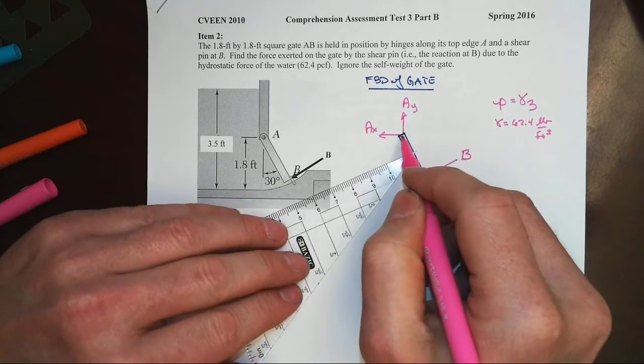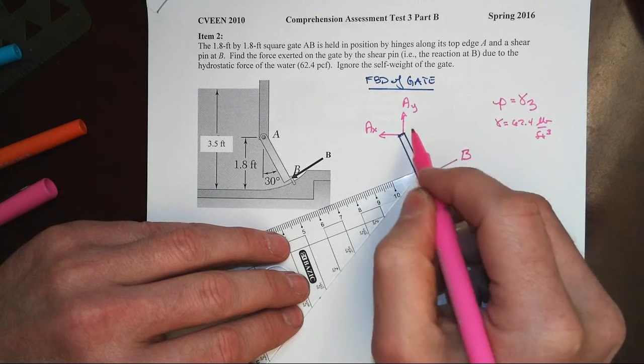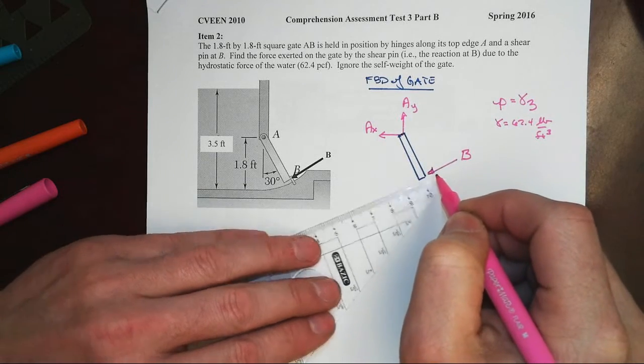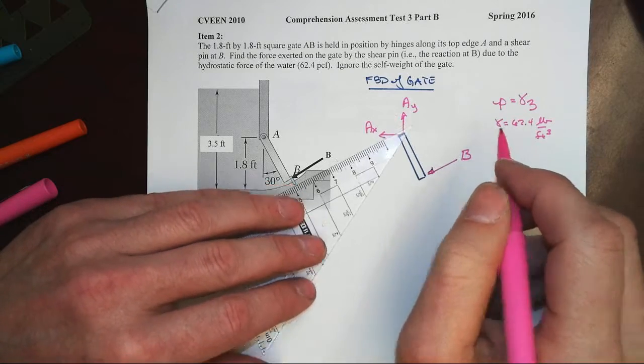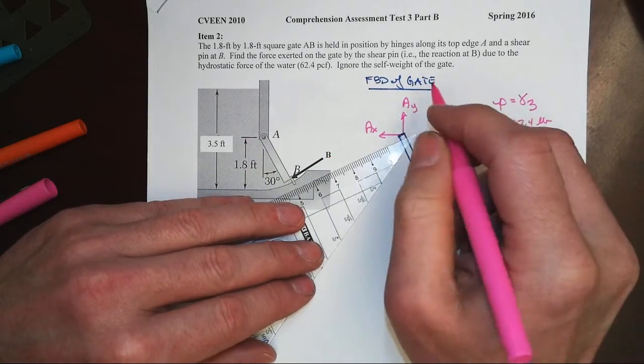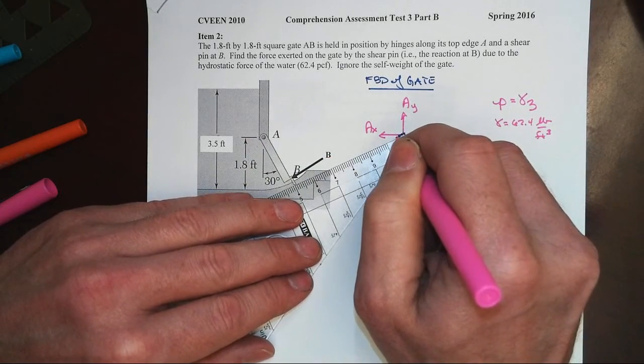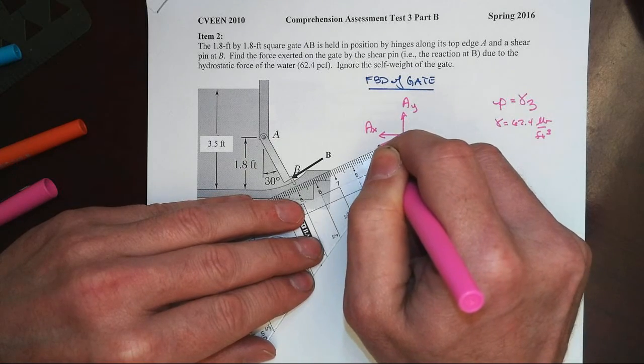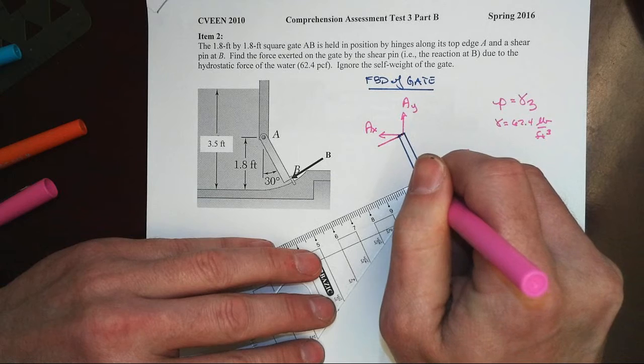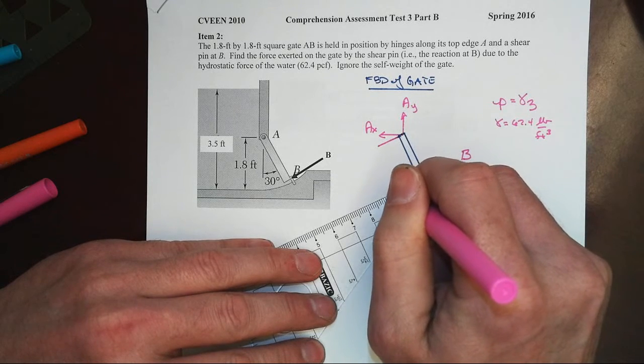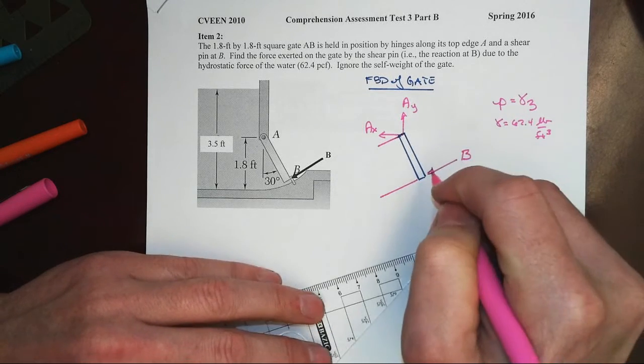when we go to pull off the gate as a free body diagram, of course we have a pin at the top, AX AY, we have the reaction at the shear pin down here at B. But this pressure that gets translated into a force down at depth is always going to be perpendicular to our surface from which we created the free body diagram.